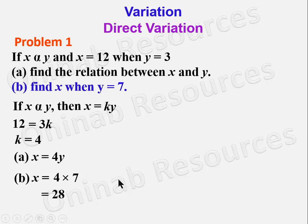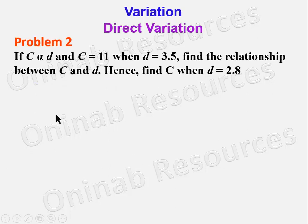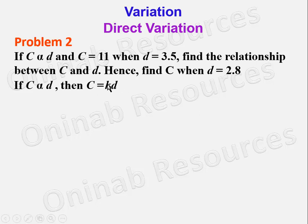We go to problem 2. If C varies directly as D and C is equal to 11 when D is 3.5, find the relationship between C and D, hence find C when D is equal to 2.8. We said if C varies directly as D then C is equal to KD, where K is the constant. C is equal to 11 when D is 3.5, so 11 is 3.5K, meaning K is 11 over 3.5.